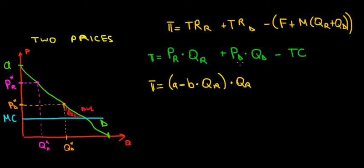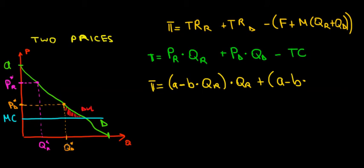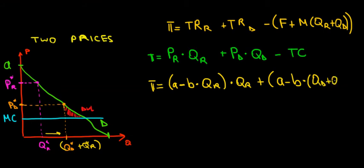For the price of the discount customers, we have the same intercept A and the same slope B because we're on the same demand line. However, for the quantity, we are now expanding beyond the quantity of the regular customers. The price for discount customers is A minus B times (QD plus QR), because we're selling above the regular customer quantity by the amount charged to the discount customers.